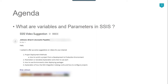Recently I got an email from one of my subscribers, Brian Johnson, and he offered some suggestions for videos on this channel. Most of his suggestions are related to project deployment methods and how to use environments when deploying packages. He also asked about explaining parameters versus variables and when to use each, so in this video I am going to explain variables and parameters in SSIS.